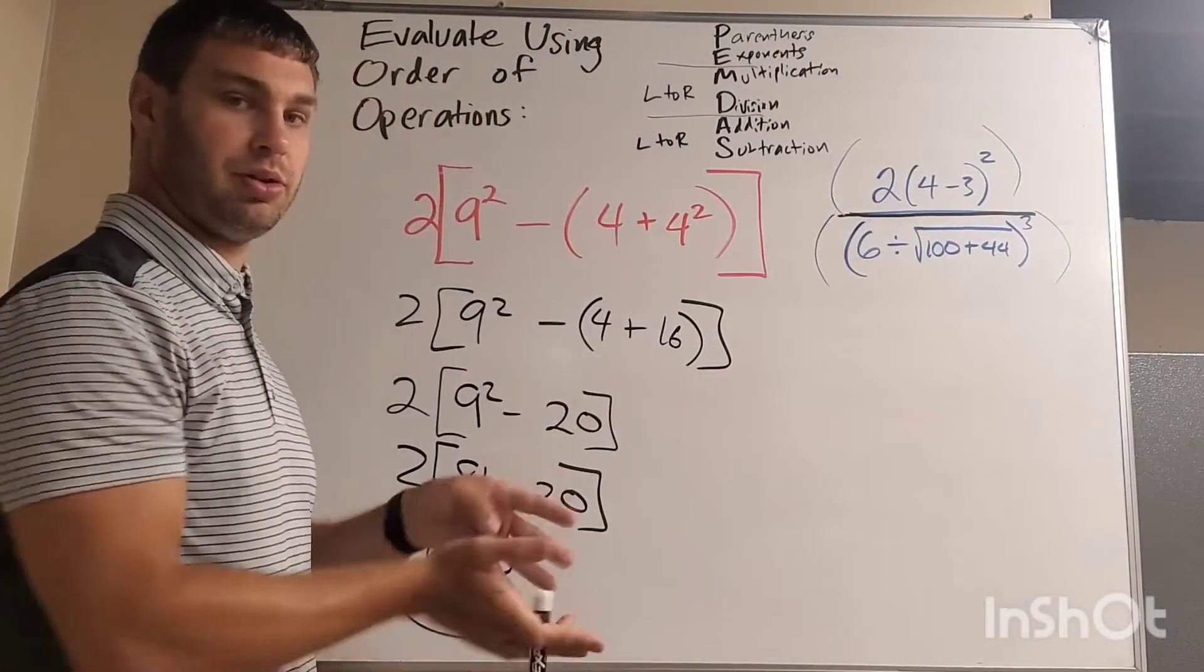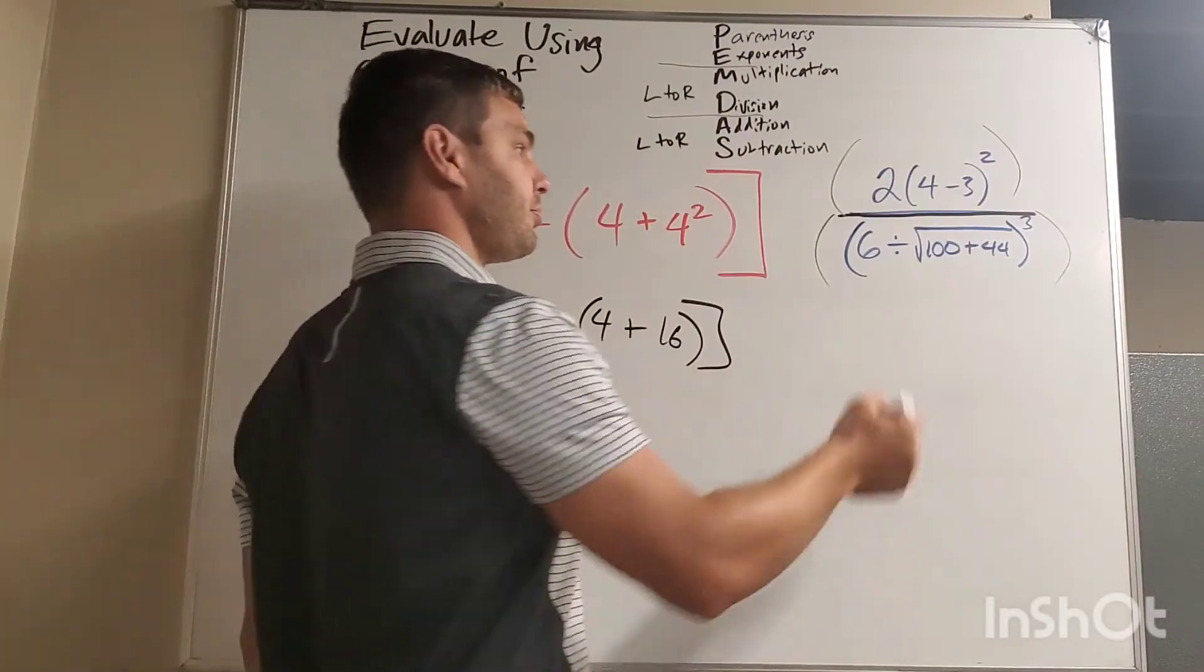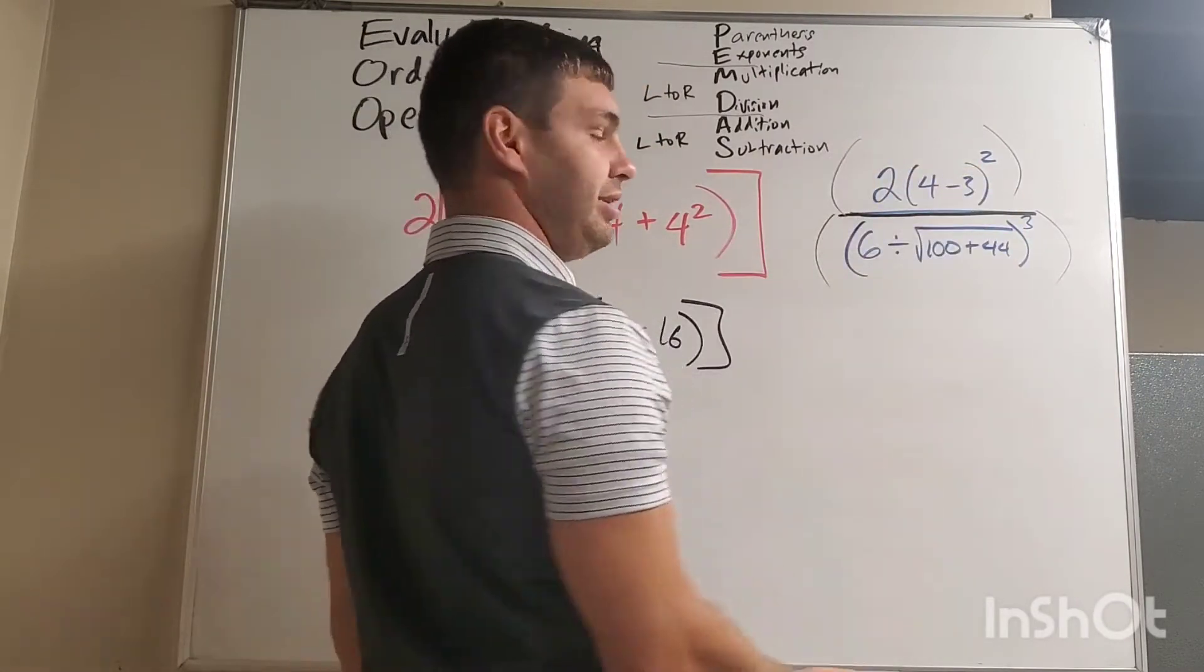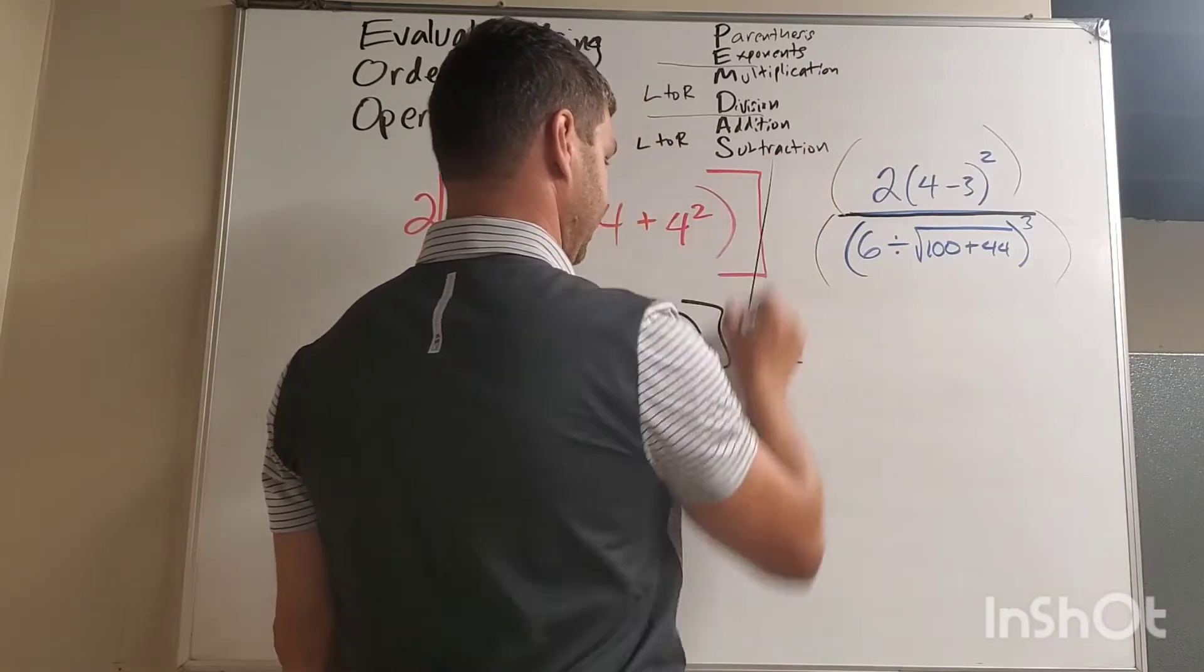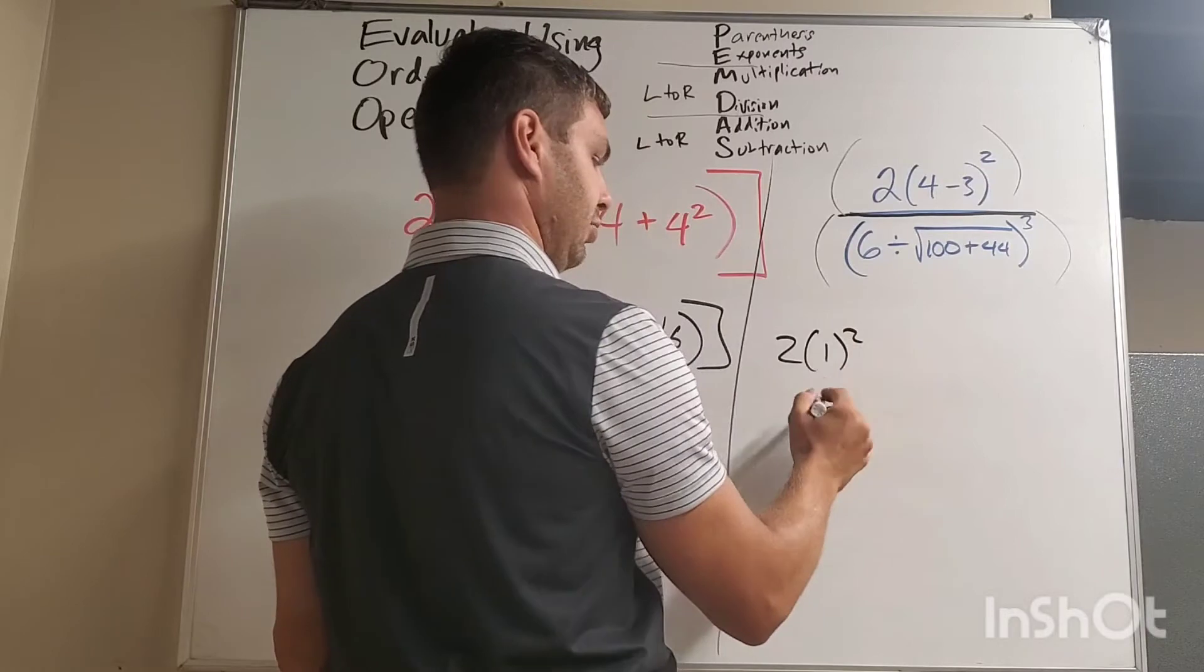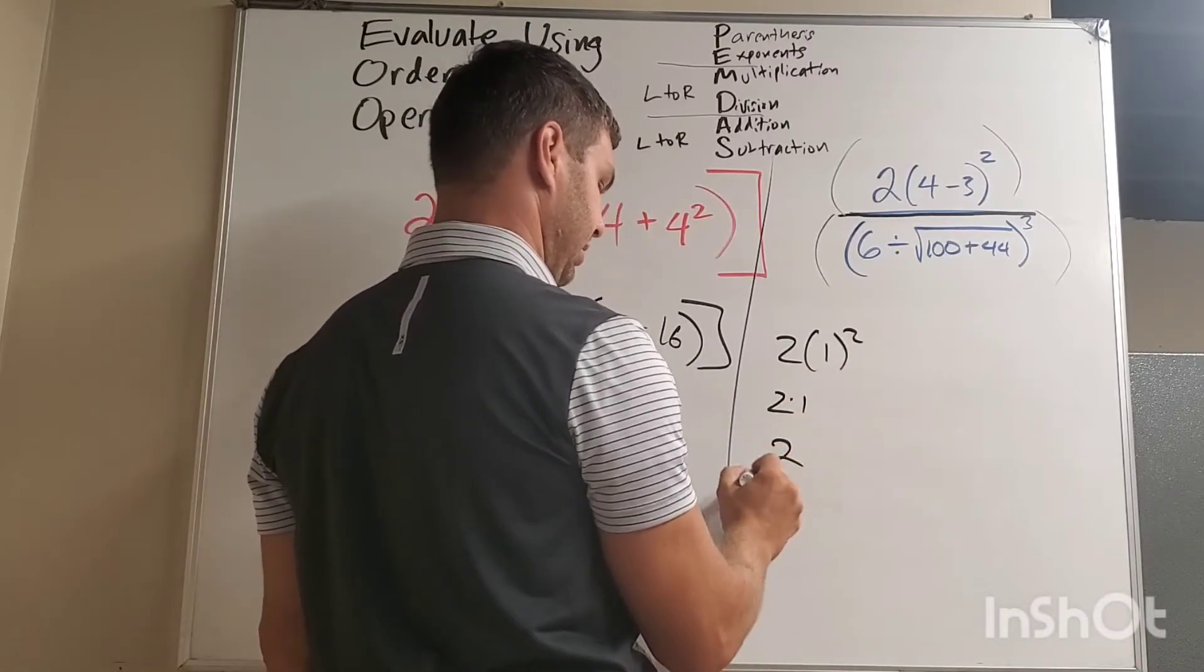Okay, so I'm going to work with the whole top first, then I'm going to do the whole bottom, and I'm going to take those two numbers and divide them and see what we get. On the top, I have parentheses, which means I have to do that first. 4 minus 3 is 1. So I'm going to be left with 2 times 1 squared. 1 squared is 1. 2 times 1 is just 2. Okay, this is my top.